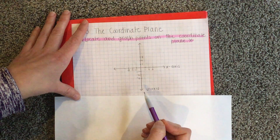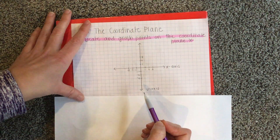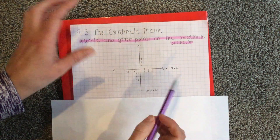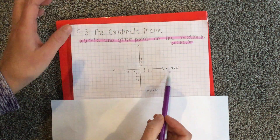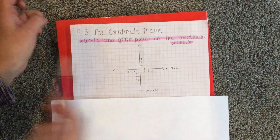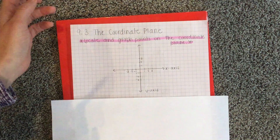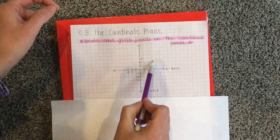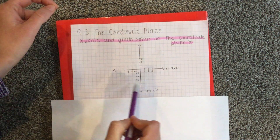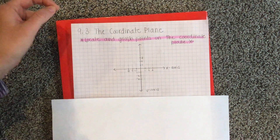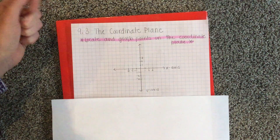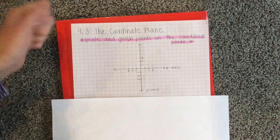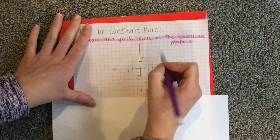Some other information you're going to need to know is the quadrants. Do you see that the x and y-axis separate your coordinate plane into four pieces? One, two, three, four. There are four quadrants, and you're going to label these quadrants with Roman numerals.